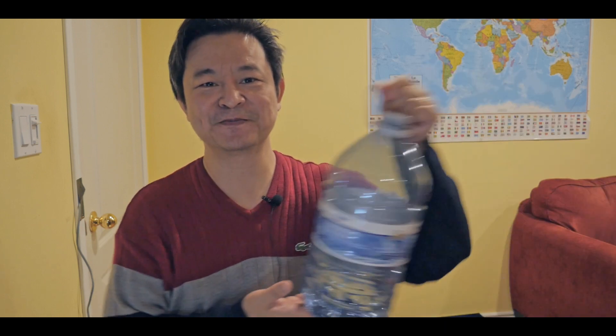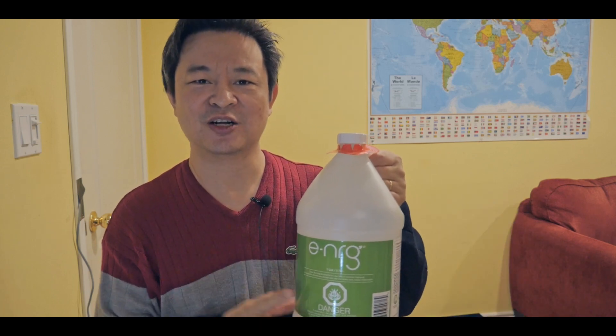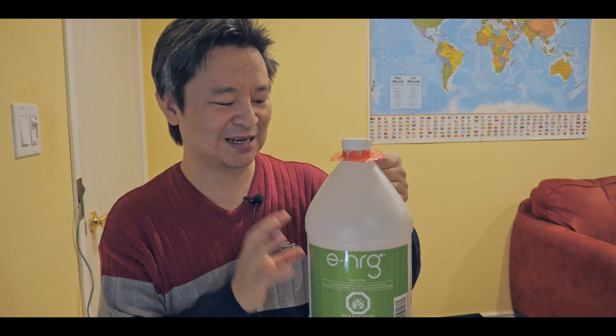Today, we'll be finding the density of distilled water, this one here, as well as biofuel, this one here. This is 92% ethanol and 8% isopropyl alcohol. We'll find out what its exact density, and then of course, the olive oil. This is 100% extra virgin olive oil. We'll find out the density of that as well. Let's get started.